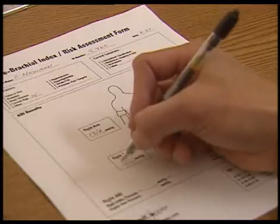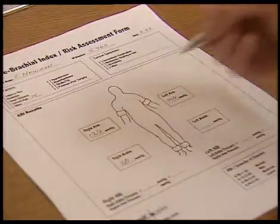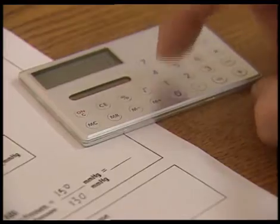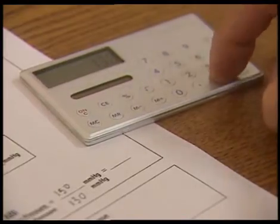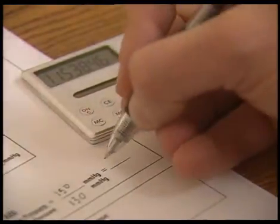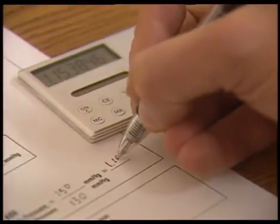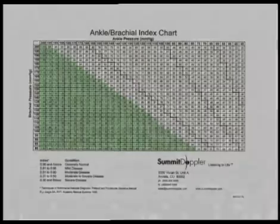The ABI is now calculated for each leg. Using a calculator, divide the ankle pressure by the higher of the two arm pressures. Instead of a calculator, you can also use an ABI chart to determine the ABI.